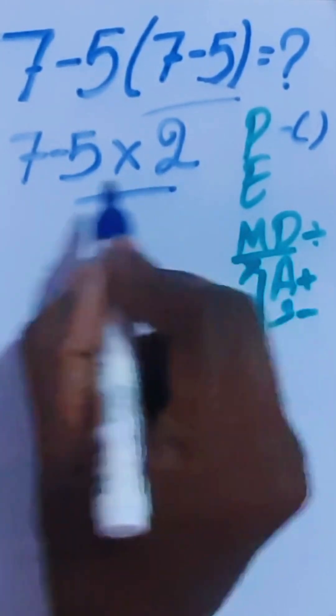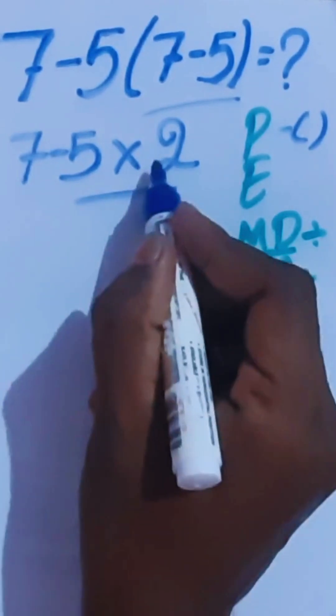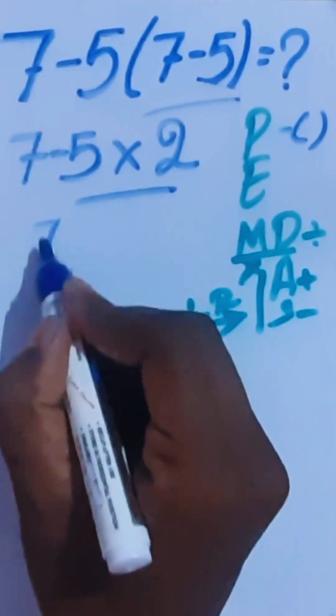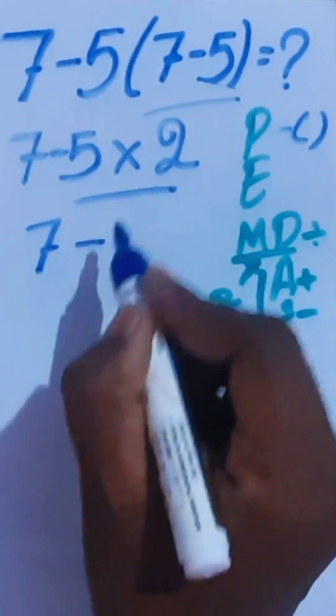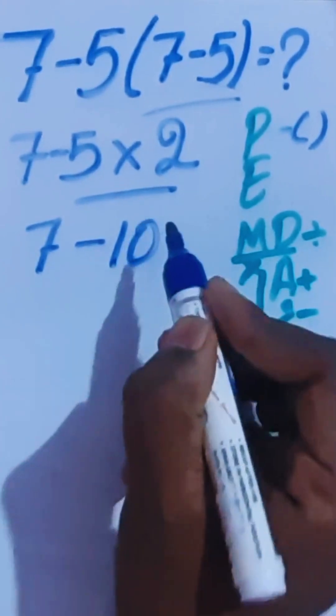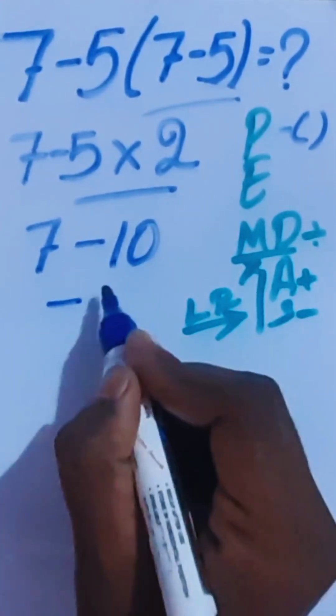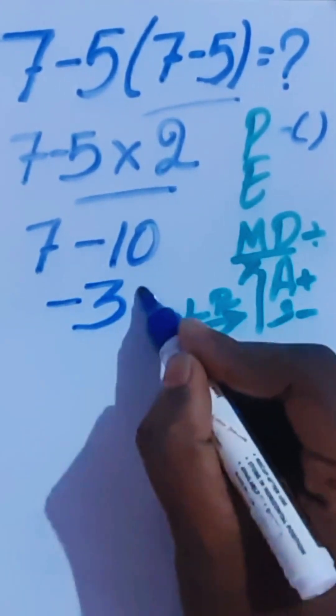Multiplication is higher priority than subtraction, so we have to do 2 times 2 equals 10 first. Now, 7 minus 10, and we will get negative 3 as the correct answer.